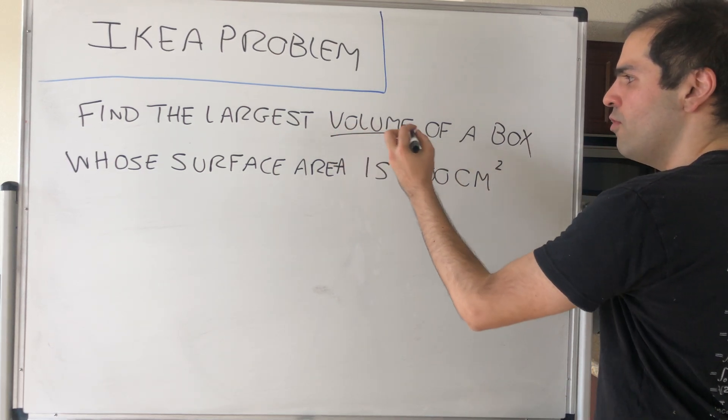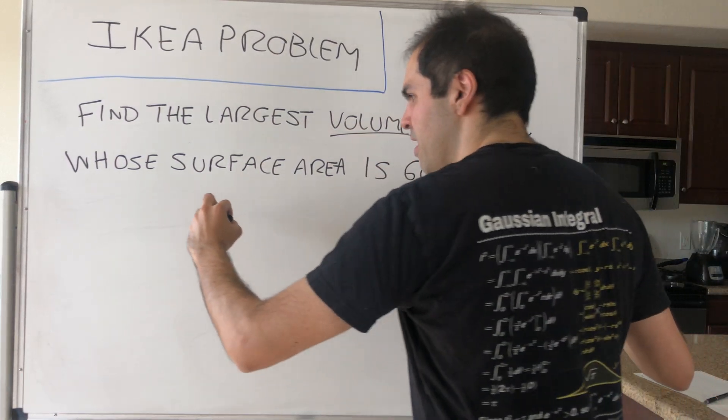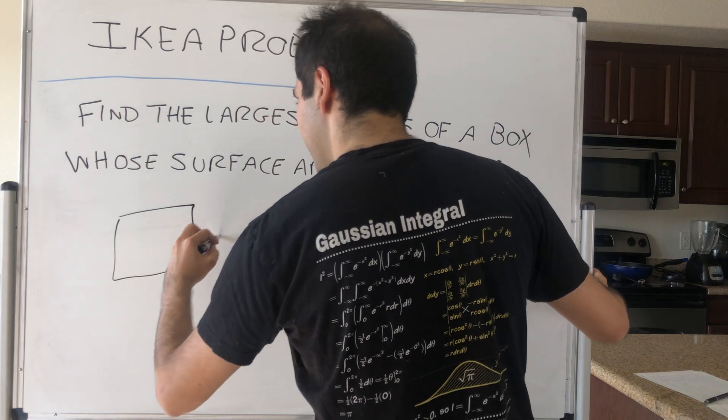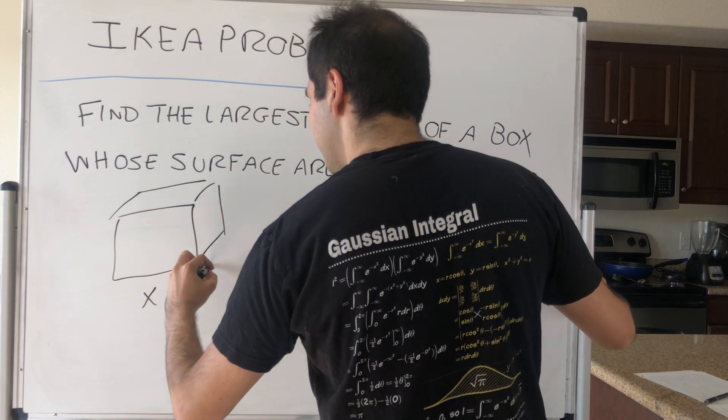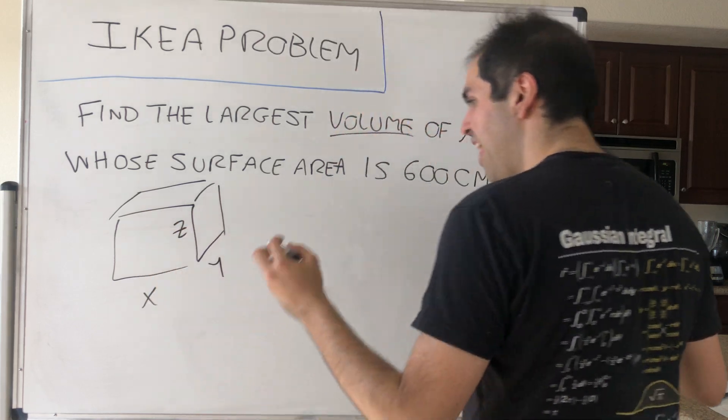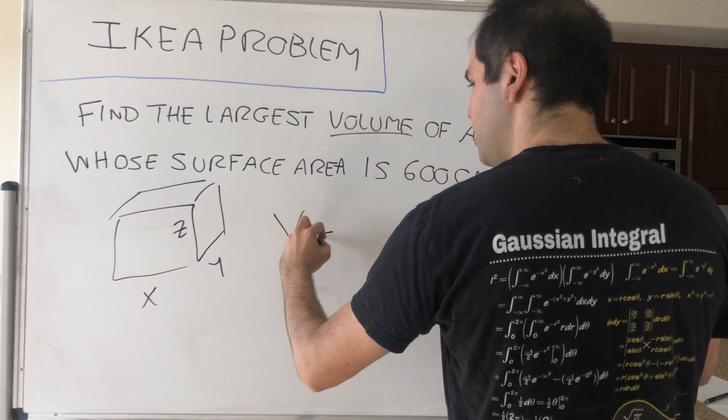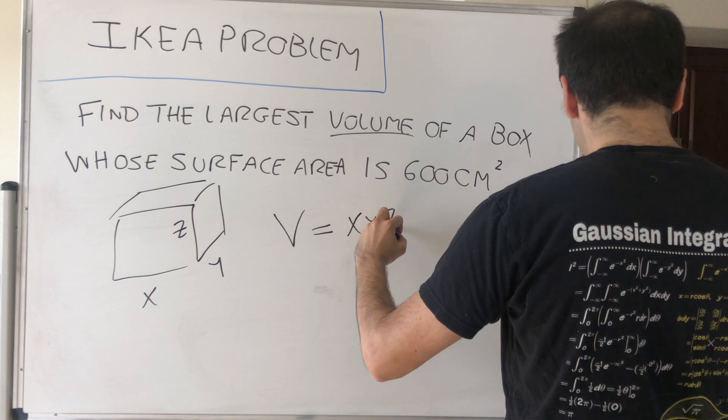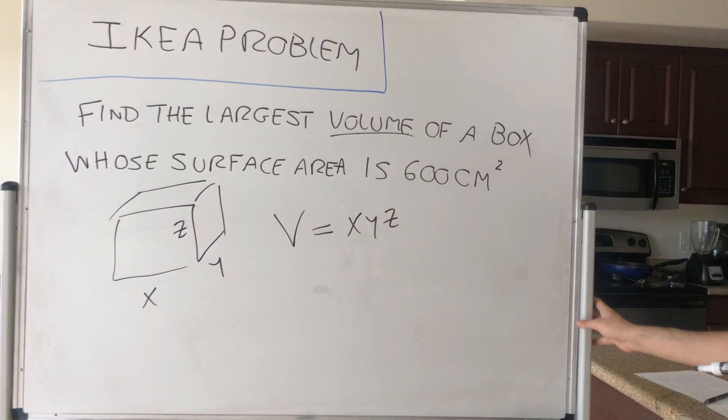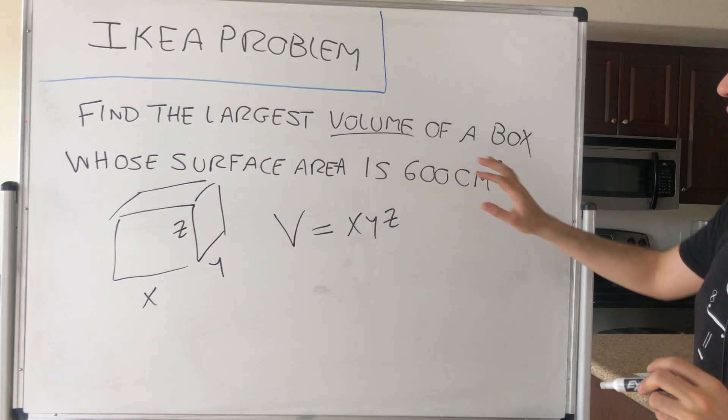What is the function we want to maximize? We want to maximize the volume of this box. Imagine a box with sides x, y, z. Then the volume is simply given by xyz, and that's the function we want to maximize.